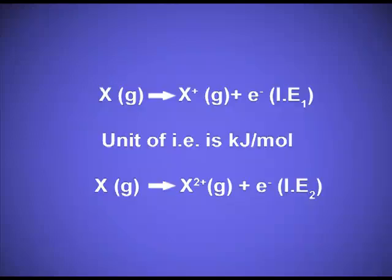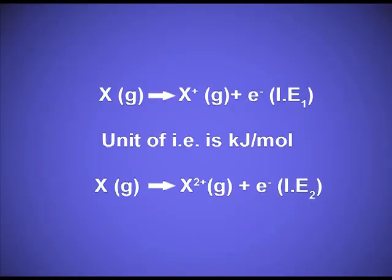X is the neutral atom in the gaseous state. We are removing one electron and X is changing into X+, that is a cation. The unit of ionization energy is kilojoules per mole.